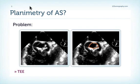We should also consider that the calcified valve can also be funnel-like, so it's difficult to assess the actual narrowest part of the valve. However, planimetry can be very useful in cases where Doppler gradients are unreliable or unavailable, and we can use it as an add-on to the other parameters in unclear cases.